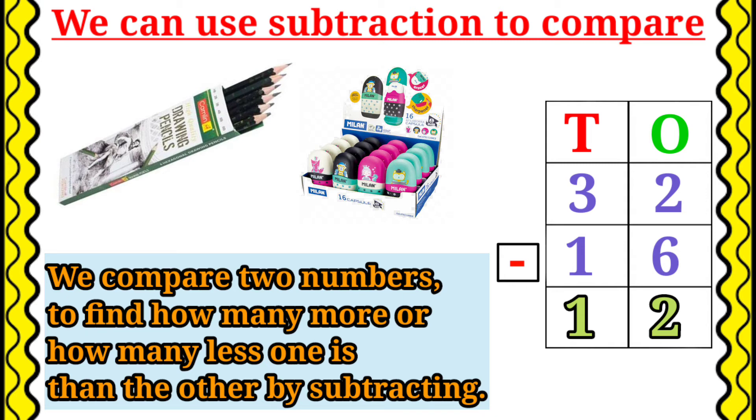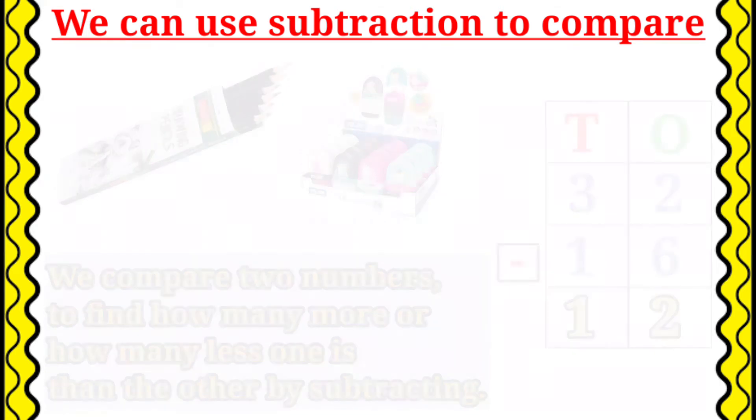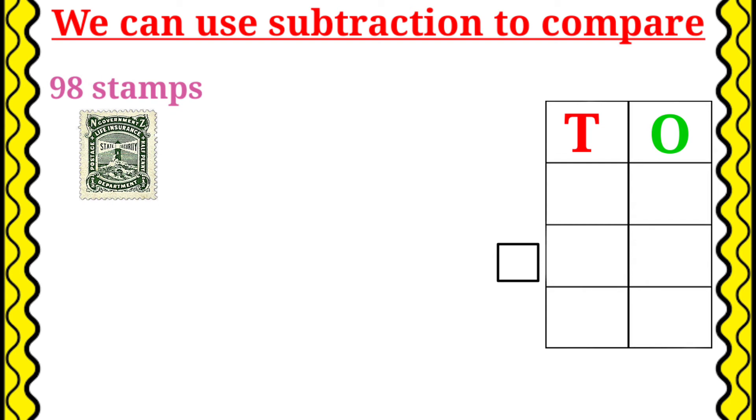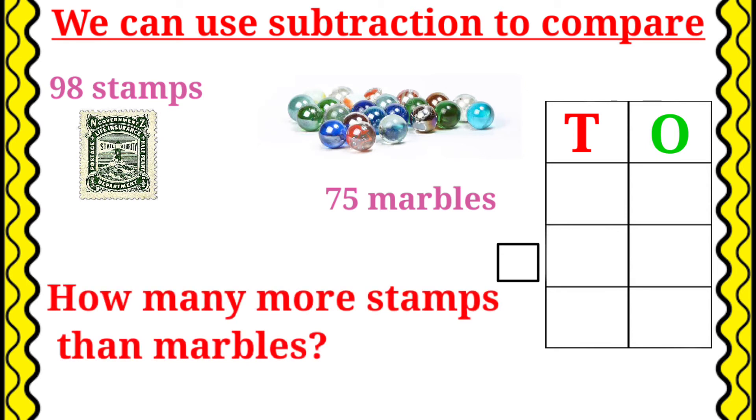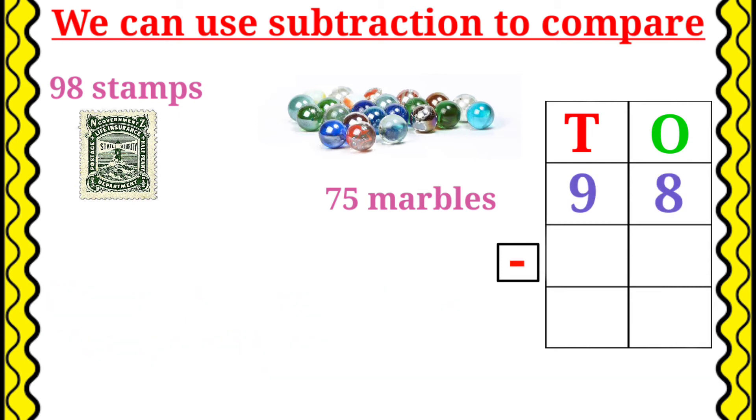Ok. Let's see the next example. So, here 98 stamps and 75 marbles. The question is how many more stamps than marbles? Ok. First, we will write the bigger number 98. Then we will write the smaller number 75.